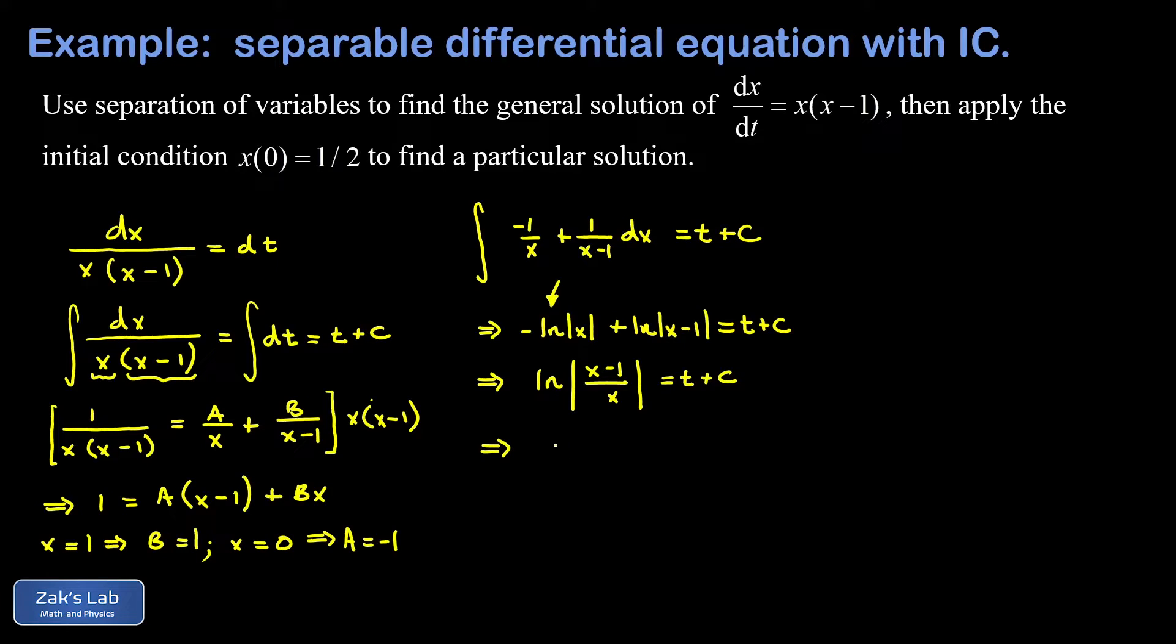So at this point, we can exponentiate and we end up with the absolute value of (x-1)/x is equal to e^(t+c). And there's a really common trick at this point. e^(t+c) is the same as e^c times e^t. And remember, c is some arbitrary constant. So c can take on any real value. But e^c is always going to be a positive number. We can go ahead and just say, well, e^c is still an arbitrary constant. And I can just give that the name c. Just understanding it's not the same c I had in the exponent, but it is an arbitrary constant. So I can write this as c·e^t with a little side note that c must be bigger than zero because this exponential only takes on positive values.